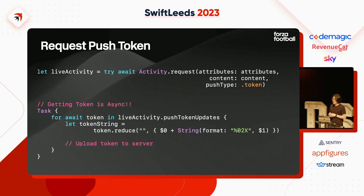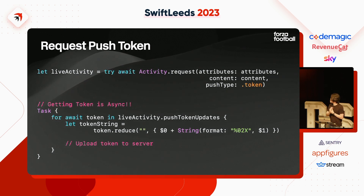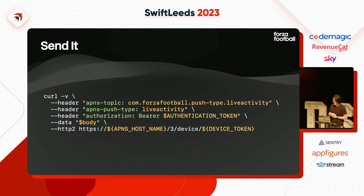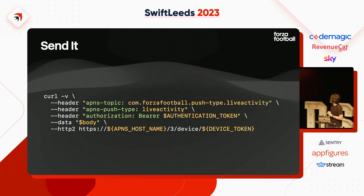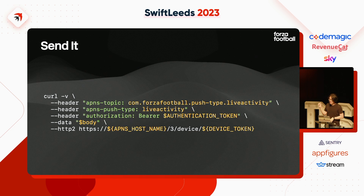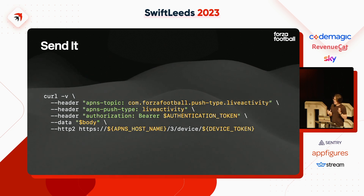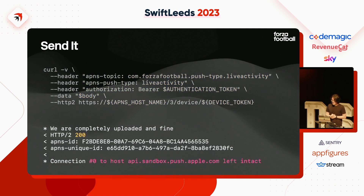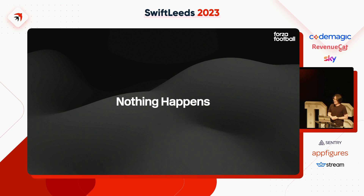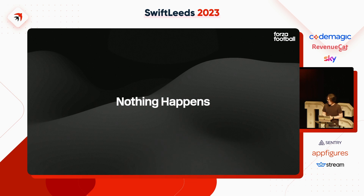We test sending push notifications using the command line. You need to set the APNS topic with the push type `.live-activity`, set push type to live activity, generate the token from the developer portal, and send the body payload. Usually you get a 200 response — looks like everything is working. But on your phone, nothing happens. You send again, 200, nothing happens. Send three more times, still nothing. So what actually happened? We need to debug it.